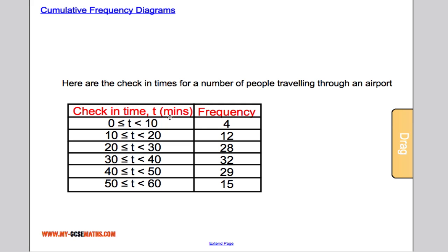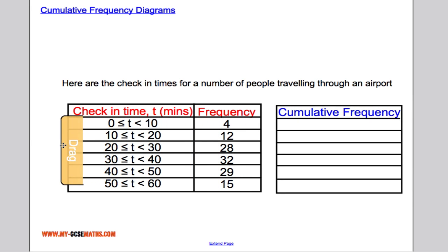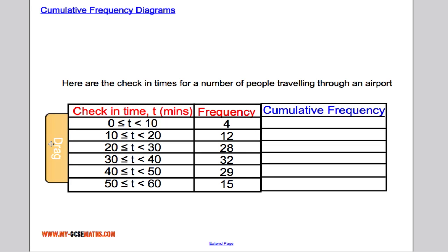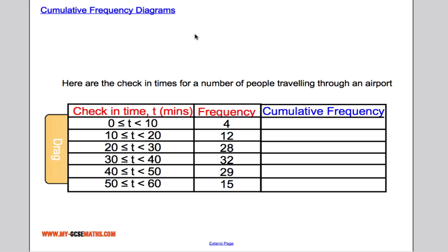In order to draw the cumulative frequency diagram, the first thing I'm going to do is add another column because I need to work out what the cumulative frequency is. The cumulative frequency is essentially a running total starting from the lowest times all the way up to the highest times. So the number of people at the beginning is 4, so whatever we have in this column always goes here. And to get the next part, what I do is I add the 4 to the 12 to keep the running total.